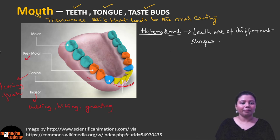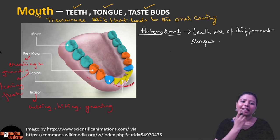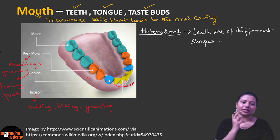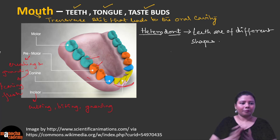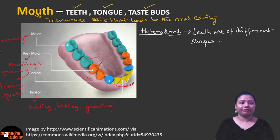Then you have two premolars, which are for crushing and grinding — they have a broad base acting as a surface on which food can be crushed and ground. Molars — we have three — also for crushing and grinding. So we have almost ten teeth for crushing and grinding (masticating). In human beings, the last molar — the wisdom tooth — comes out very late in life and is of very little use for us.